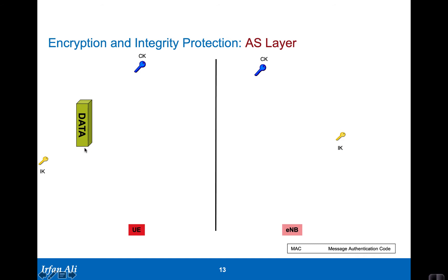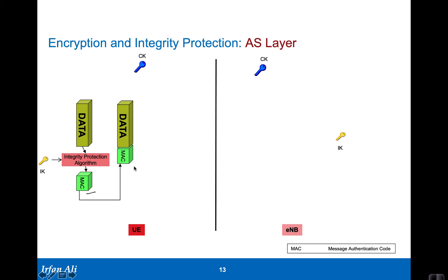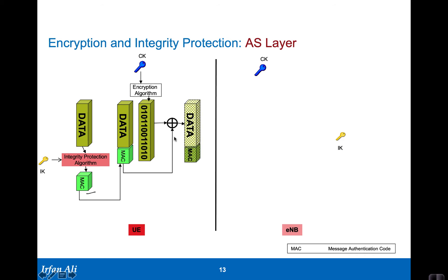At the access stratum level, the first thing that happens is integrity protection on the RRC message itself, computing the message authentication code that is appended to the data. Then it takes this data and the message authentication code and encrypts it using the ciphering key—it creates a random number and XORs it—producing encrypted data and the message authentication code, which is then received by the eNodeB.